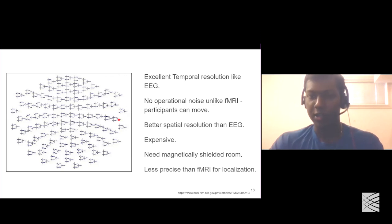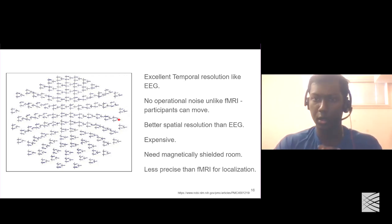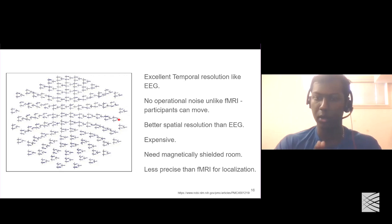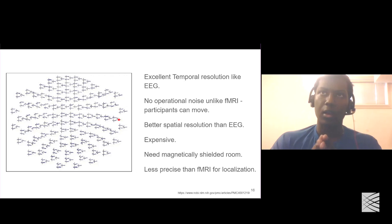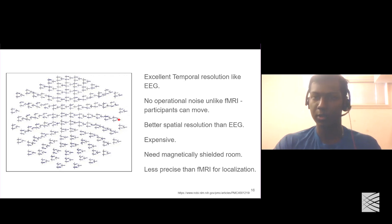This follows from the comparison between MEG and fMRI, where fMRI is the best for localizing activity in the brain. MEG is also better than EEG, but can only give you a somewhat surface-level idea of where the activity is actually taking place.